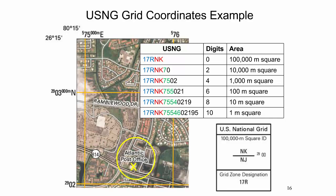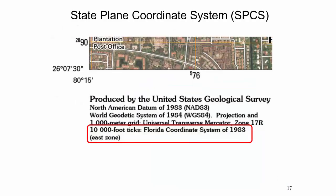For maps of scale 1 to 100,000 and larger, the numerical part is typically a 6-digit or 8-digit number.